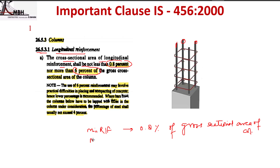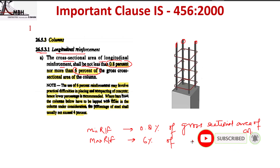The maximum reinforcement you can provide is 6% of the gross cross-sectional area of the column. However, the code notes that if you are providing 6% reinforcement, you may have difficulties in placing and compacting concrete or at overlapping locations. In those cases, the code recommends that the percentage of steel should not exceed 4%.